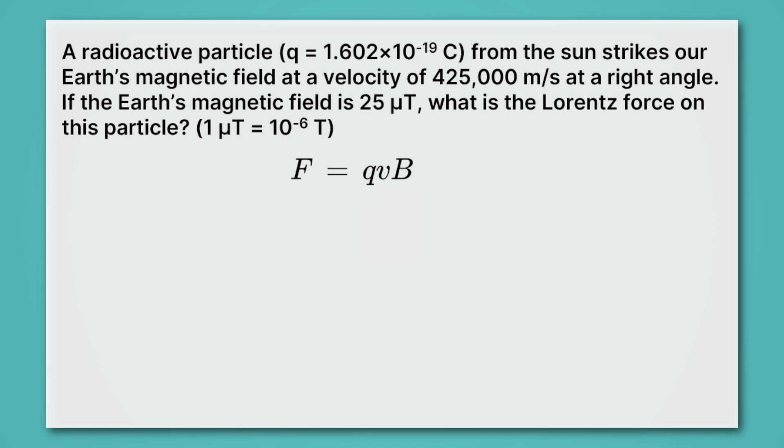If the Earth's magnetic field is 25 microtesla. What does that mean? Let me just remind you that this weird little U is the Greek letter mu, and it stands for micro. So we read this 25 microtesla. Then we're asked, what is the Lorentz force on this particle? And we're told that 1 microtesla equals 10 to the minus 6 tesla.